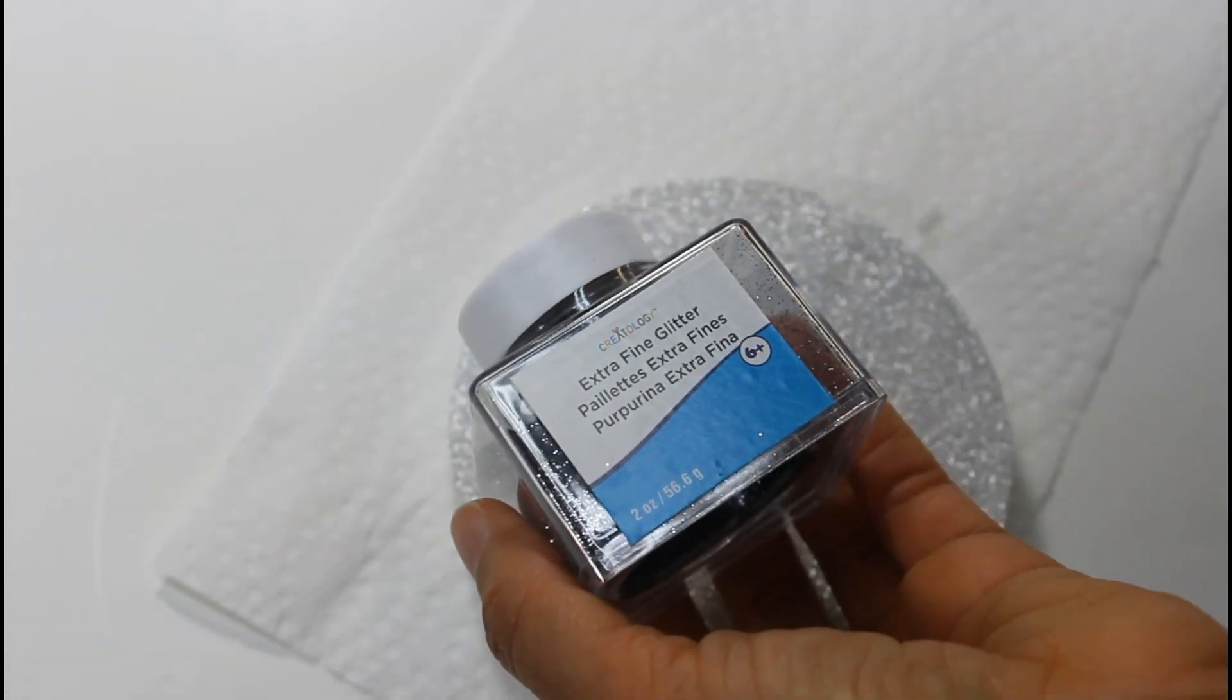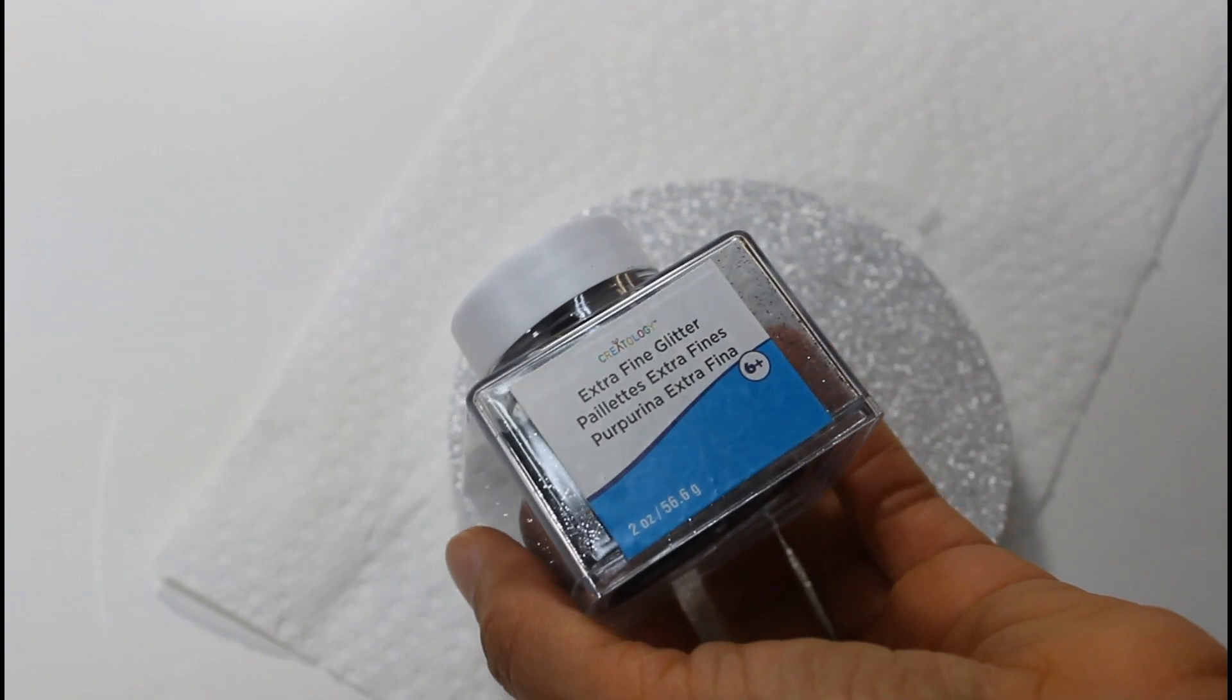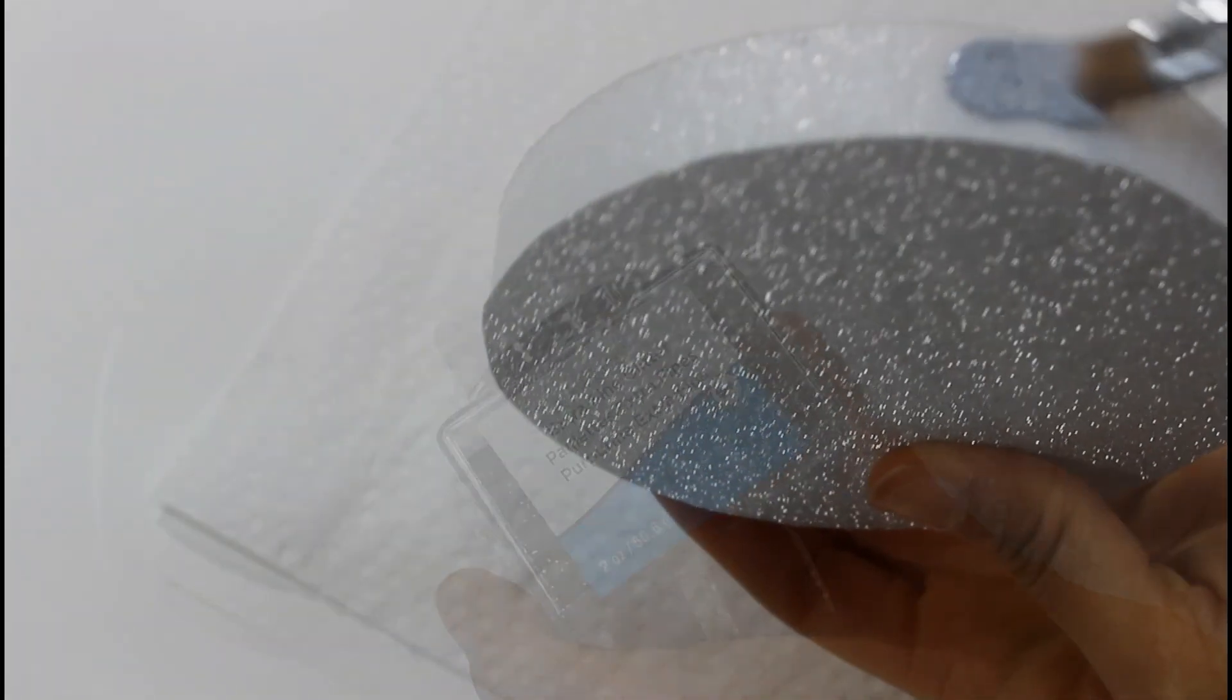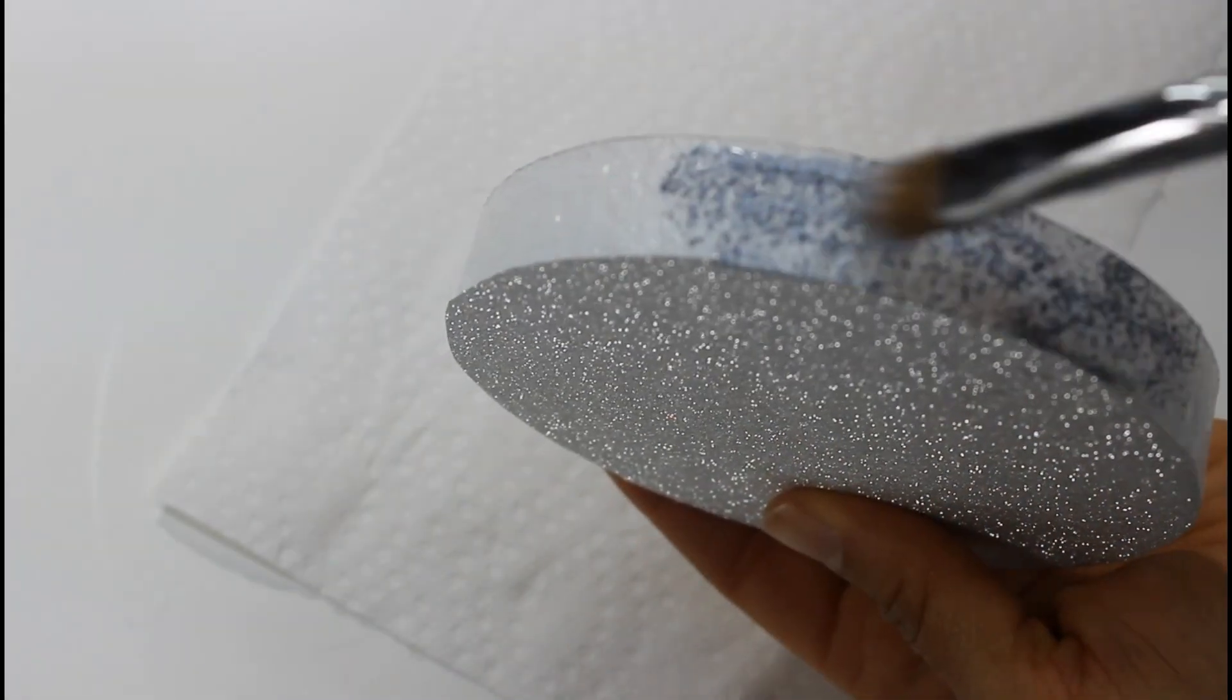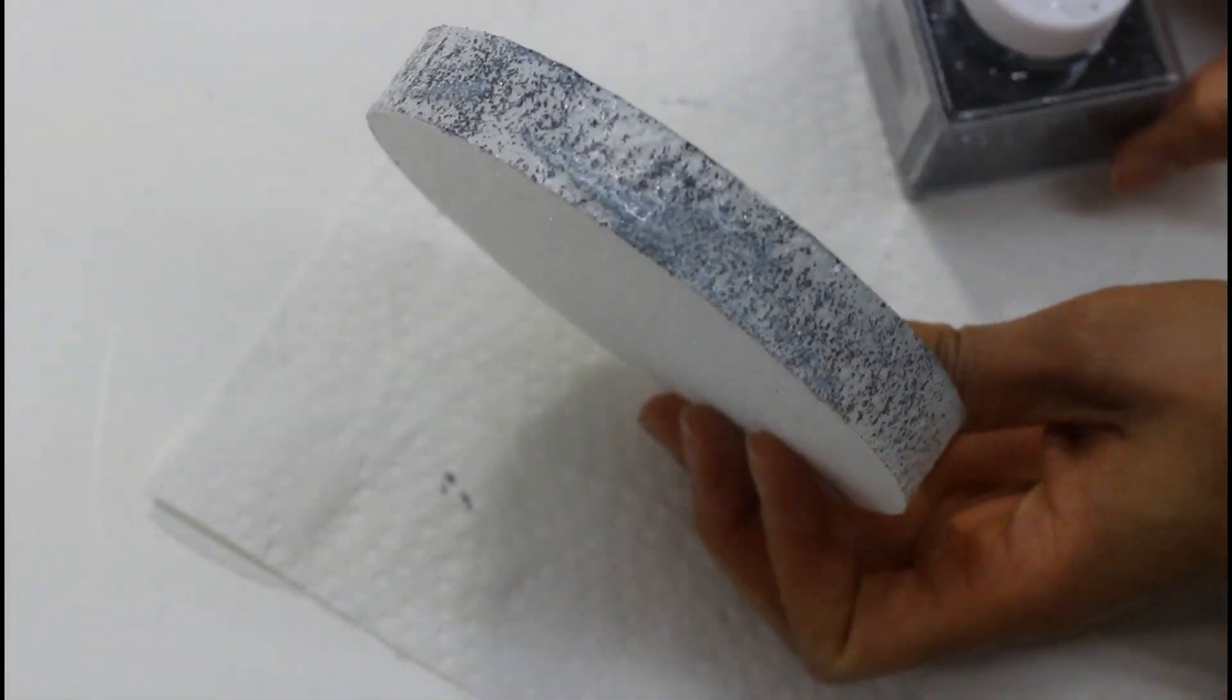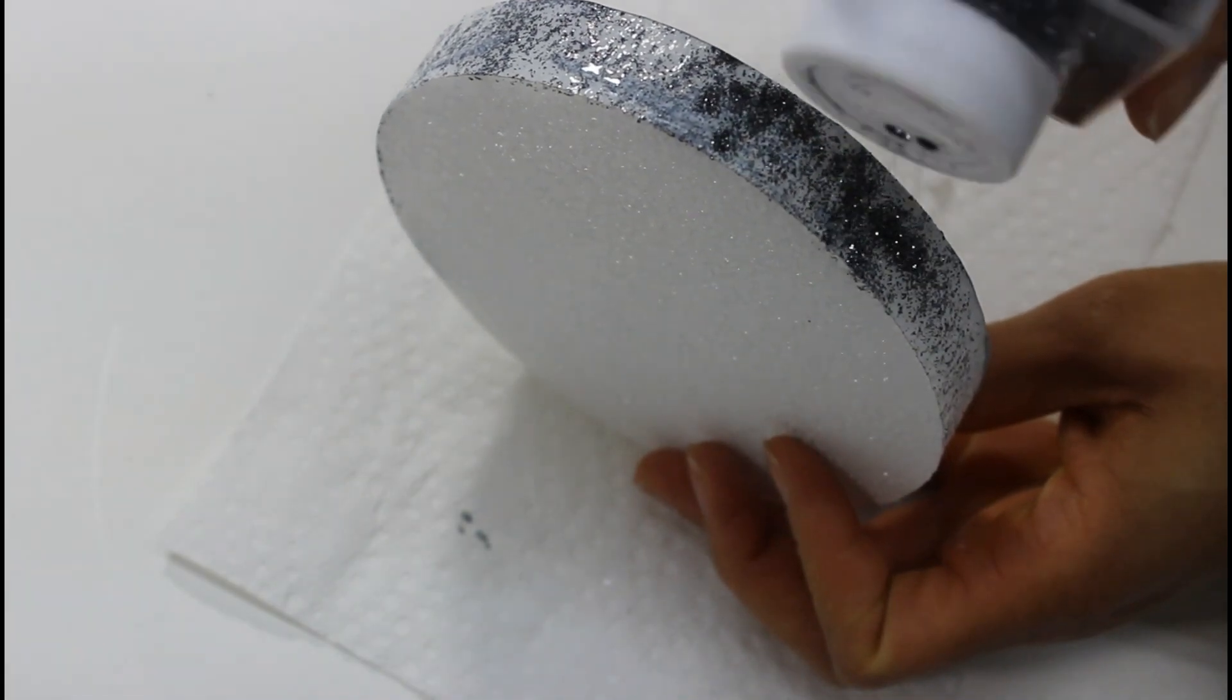I'll be going in with black iridescent glitter. Now, you can use whatever kind of glitter that you would like. This is just what I had on hand. I had some leftover mod podge and glitter from a previous project, so I just decided to go ahead and use that. Now I'm just darkening it up with the black fine glitter.